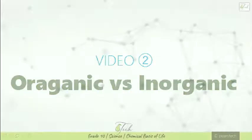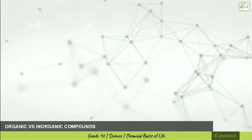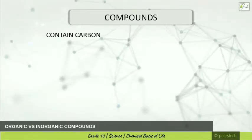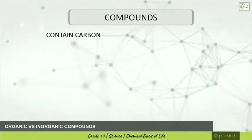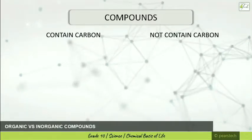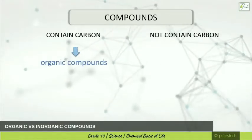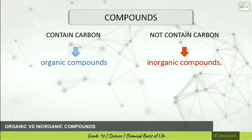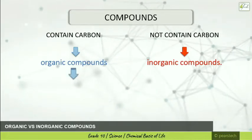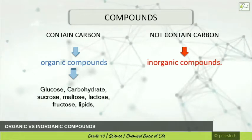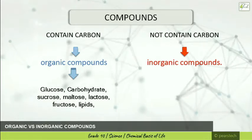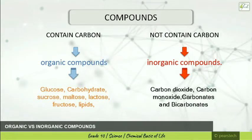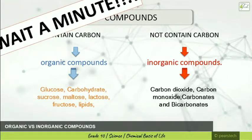We will try to understand organic versus inorganic compounds. Compounds are divided into two: organic and inorganic. As it comes in your book, it says compounds that contain carbon are known as organic compounds, while compounds that do not contain carbon are known as inorganic compounds. Under organic compounds: glucose, carbohydrates, sucrose, maltose, lactose, fructose, and lipids. Under inorganic compounds: carbon dioxide, carbon monoxide, carbonates, and bicarbonates.